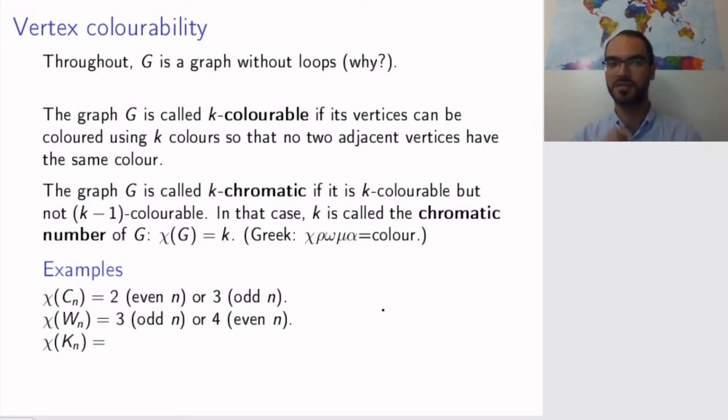How about the complete graph? Pause and think. The answer is the complete graph needs a whole bunch of colors. Let's look at the K4 complete graph. Because all vertices are adjacent to all other vertices, no two vertices can be of the same color because if they were, then the adjacency between them would not work. So that is why we need n colors to color the complete graph.